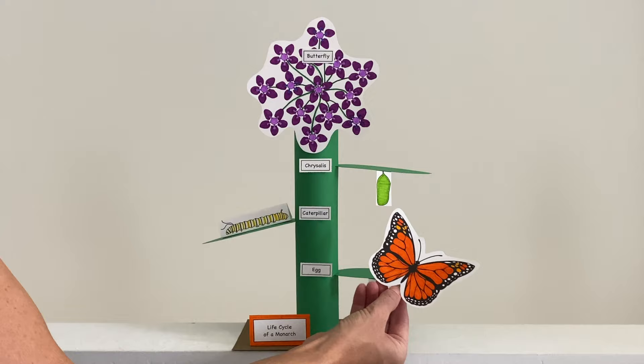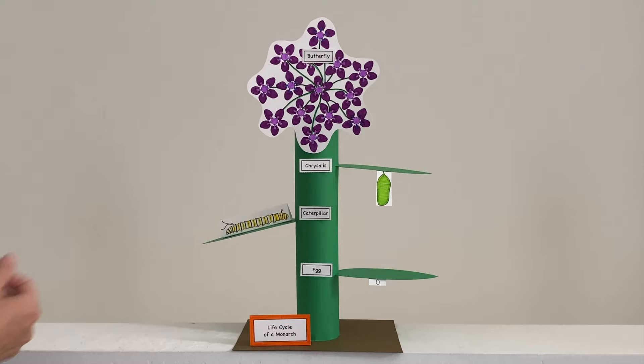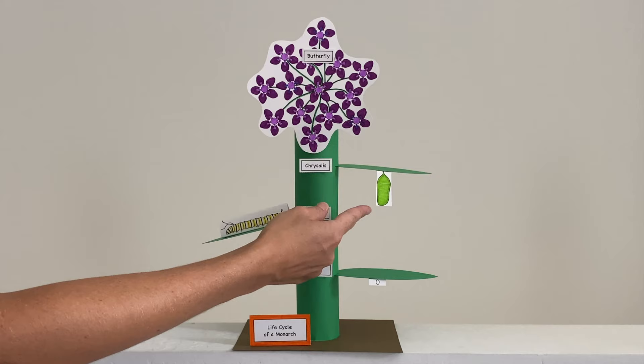A monarch butterfly lays one egg on a leaf. That egg hatches into a caterpillar. The caterpillar, or larva, continues to eat the leaf and grow and grow until it builds a chrysalis.